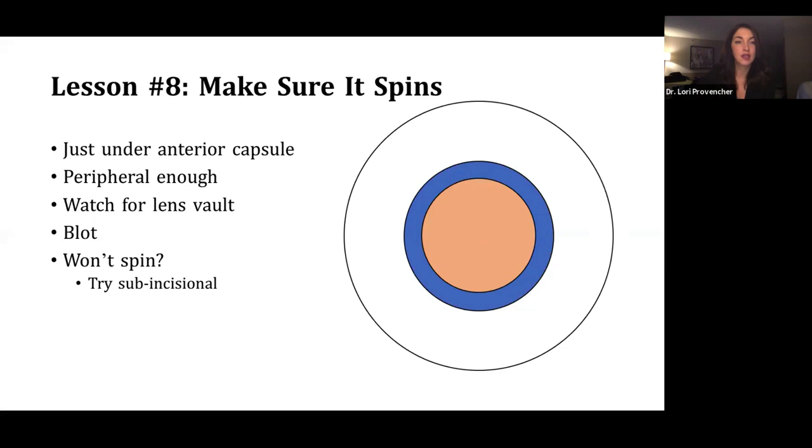Watch for lens vaults. If the lens is vaulting forward, that means that BSS is stuck behind the cataract, and if you keep pushing BSS, you're risking blowing out the posterior capsule. And so after you inject, blot down a little bit to keep your cataract back. And if it won't spin, try sub-incisional hydrodissection. What I mean by that is here, I'll show you some graphics.